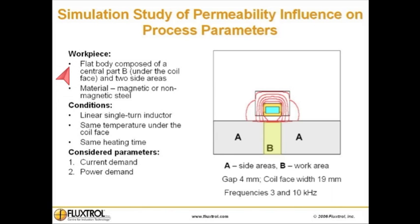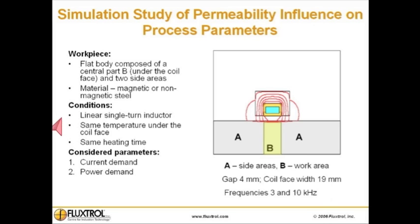Simulation study of permeability influence on process parameters. Workpiece: flat body composed of a central part B under the coil face and two side areas. Material: magnetic or non-magnetic steel. Conditions: linear single turn inductor, same temperature under the coil face at the same heating time. Considered parameters: current demand and power demand.